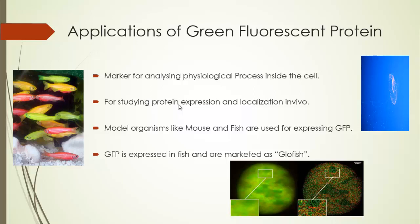Green fluorescent protein is used as a marker for analyzing physiological processes happening inside the cell. It is also used for studying protein expression and localization in vivo, within the cell or within the organism of interest. Model organisms like mouse and fish are used for expressing GFP, and GFP-expressing fish are marketed as GloFish.